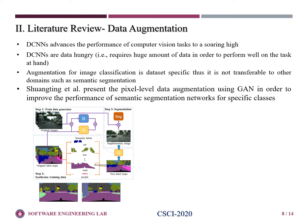Data augmentation literature review advances the performance of computer vision tasks to a soaring high. However, these algorithms require a huge amount of data in order to perform well on the task at hand. Augmentation for image classification is dataset-specific, and thus it's not transferable to other domains, such as semantic segmentation. In one line of research, Shankting presents pixel-level data augmentation using GAN in order to improve the performance of semantic segmentation networks for specific classes. Their network performs well by generating extra-label semantic classes.